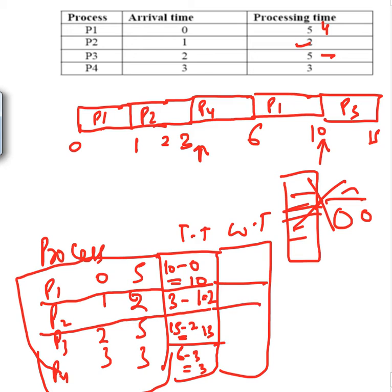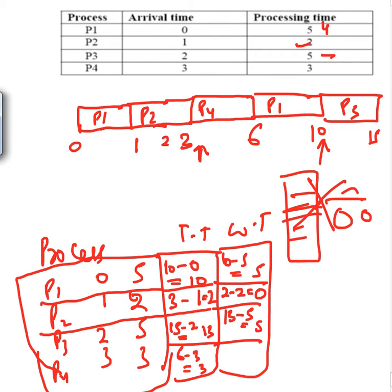Now for waiting times. P1: turnaround time is 10, burst length is 5, so waiting time = 10 − 5 = 5. P2: arrived at time 1 and finished at time 3, burst is 2, so waiting time = 0 — it doesn't wait at all. P3: turnaround time is 13, burst length is 5, so waiting time = 13 − 5 = 8. P4: turnaround time is 3, burst is 3, so waiting time = 0.